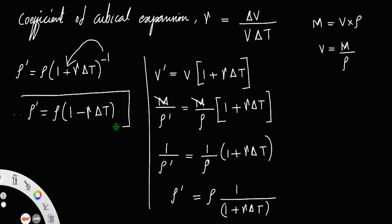So this is the final expression for the density: density equal to initial density times 1 minus the coefficient of cubical expansion times the change in temperature.